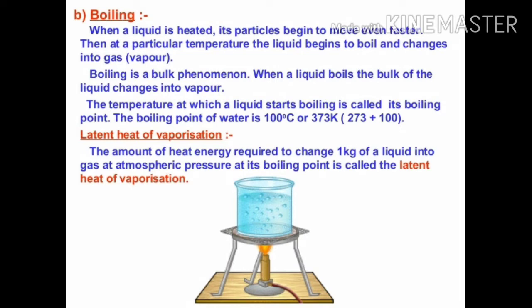The latent heat for boiling is known as latent heat of vaporization, because boiling is a kind of vaporization. The amount of heat energy required for 1 kg of liquid to convert into a gas at atmospheric pressure is known as the boiling point. That means, 1 kg of water converting into gas at atmospheric pressure requires what is called the latent heat of vaporization.